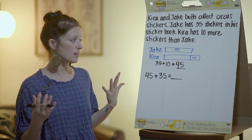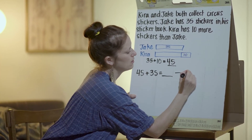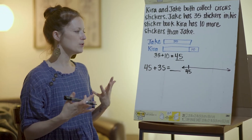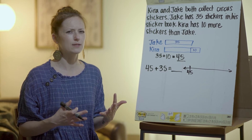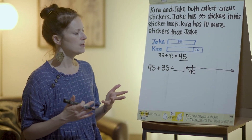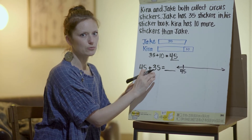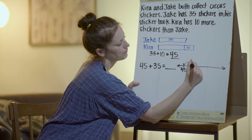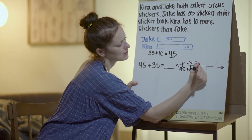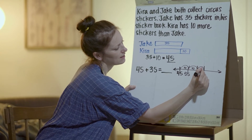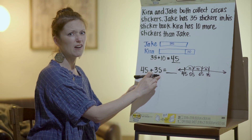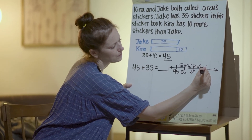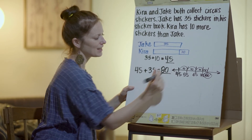One way to solve this is with a number line. I'm going to start with 45. When using a number line, I really like to jump with friendly numbers, and 10 is a really friendly number because I can count by 10s easily. I know I have at least three 10s in 35, so I'll make jumps of 10: 45 plus 10 gets me to 55, then 10 more to 65, then 10 more to 75. But I still have those five 1s, so I'll do a jump of 5 — and from 75 plus 5 more, I get 80. So together, Jake and Kira have 80 stickers.